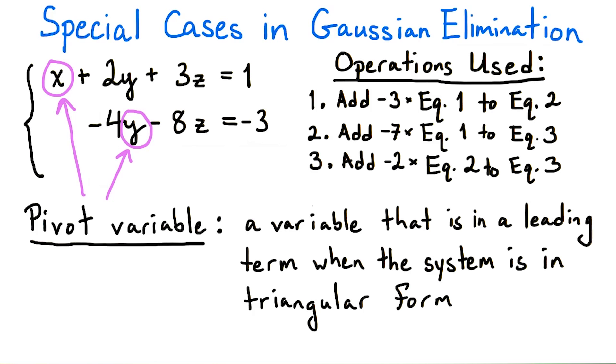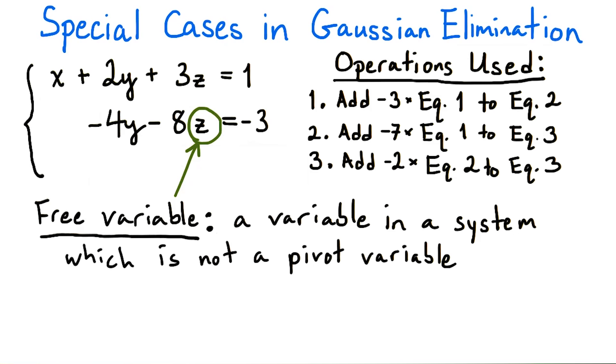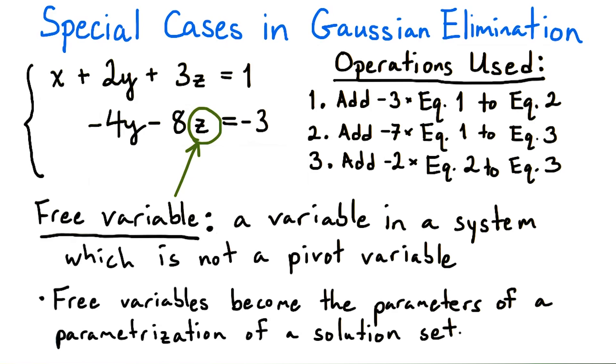In this case, x and y are leading terms, so they are the pivot variables. Since z is not a leading term in any of the equations, it will be a free variable. Since z is a free variable, it will become a parameter in our parameterization of the solution set.